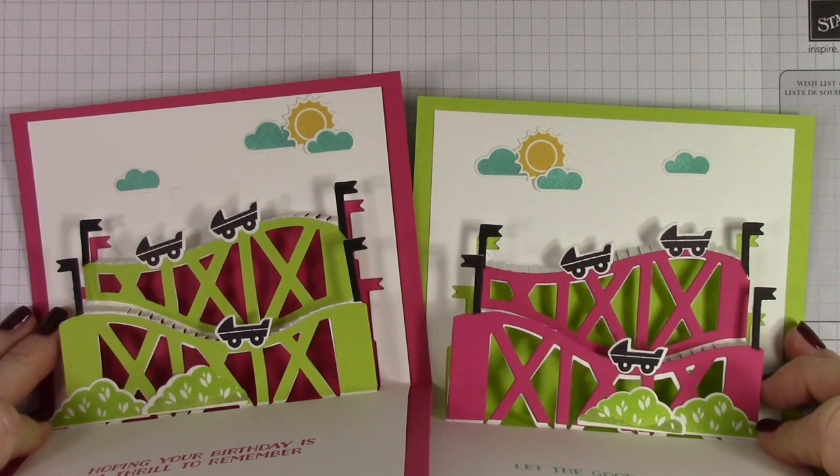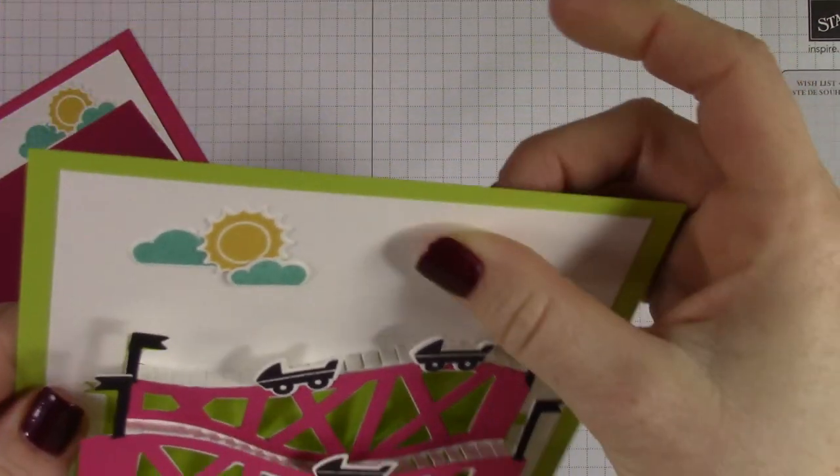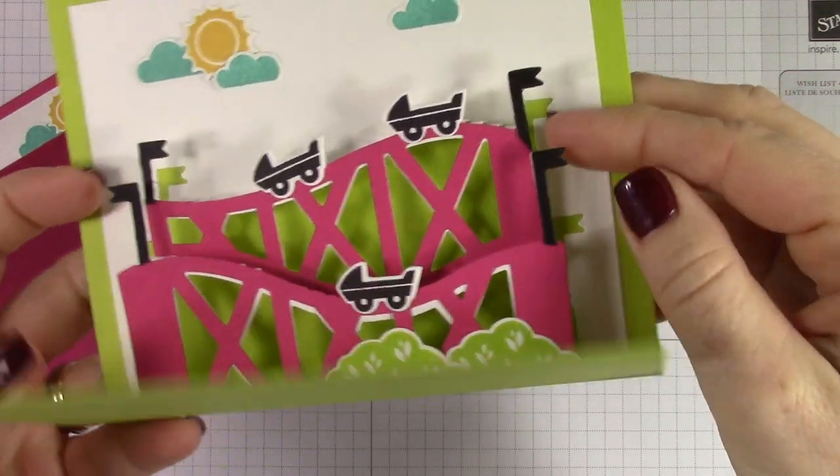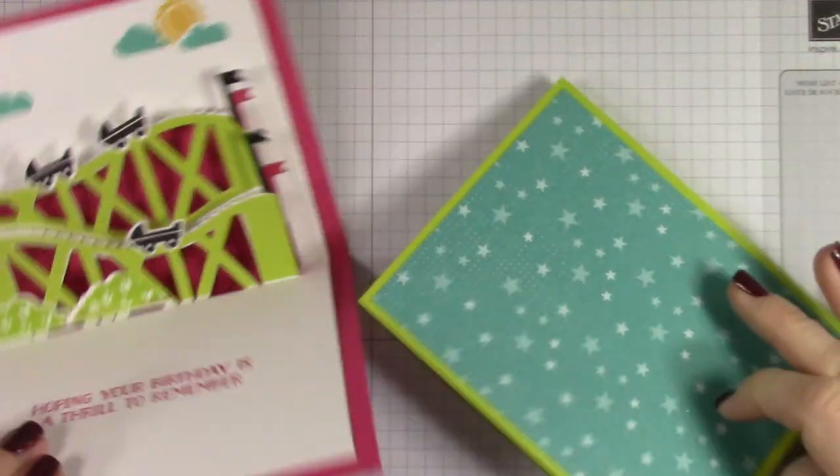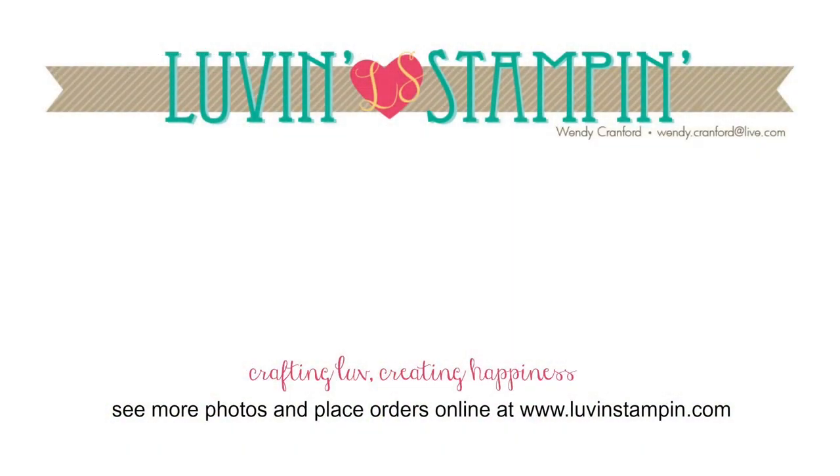So the fronts of the tracks here you can see all I did was just cut extras out and laid it right over the top and it's got a little shadow there and it's perfectly fine. And then I did the clouds and the sunshine and they came together really cute.